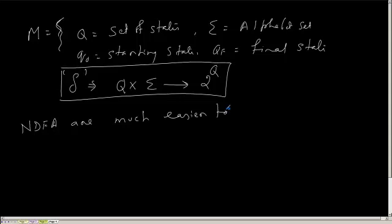I do not have to say that for symbol A, if Q1 is moving to Q2, then for other symbols B, C, D, it will go to the reject state in DFA. But in NDFA, you don't have to mention it — you just discard it. It is much easier to express from a higher abstract level of language.